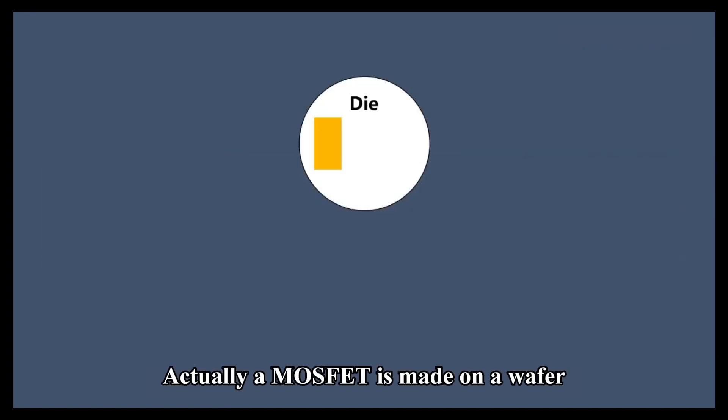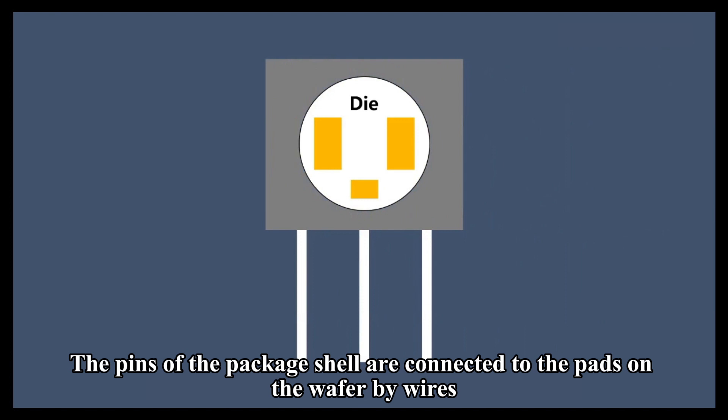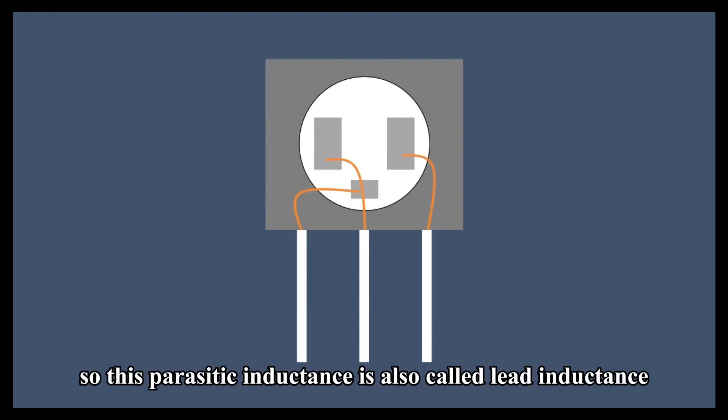Actually, a MOSFET is made on a wafer, which is actually quite small, and then the package shell of the MOSFET is much larger than the size of the wafer. The pins of the package shell are connected to the pads on the wafer by wires. It is this wire that introduces parasitic inductance, so this parasitic inductance is also called lead inductance.